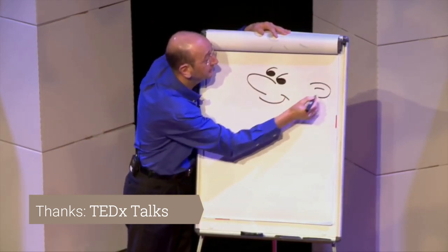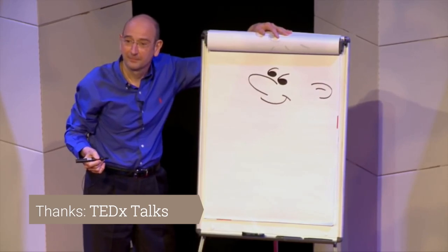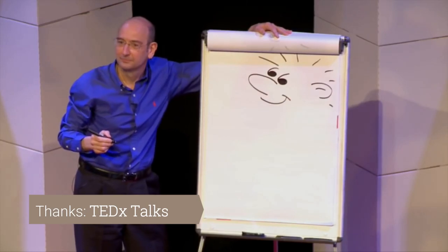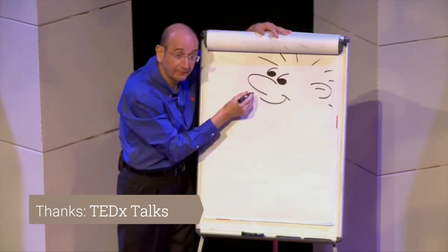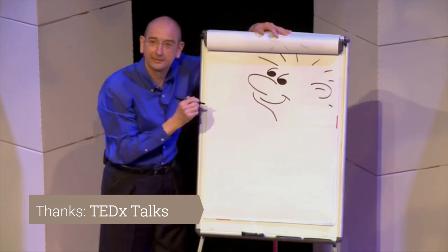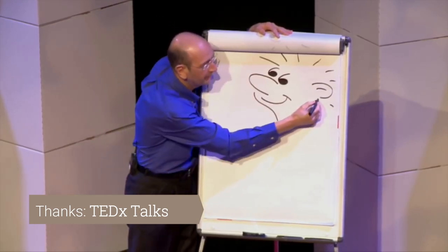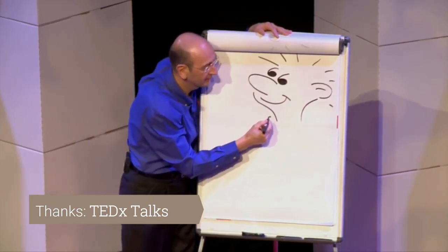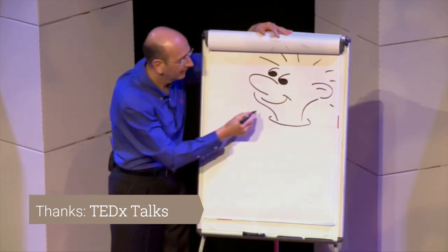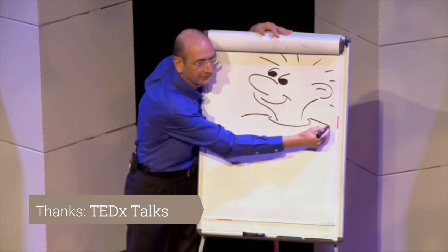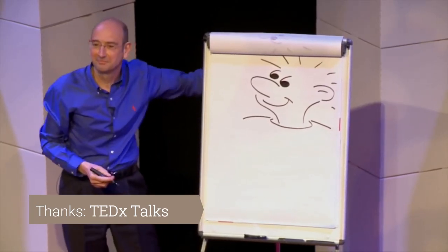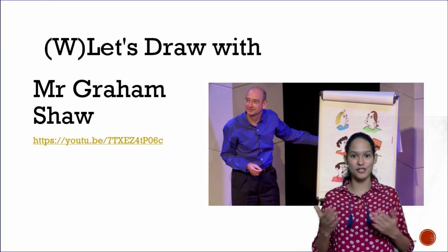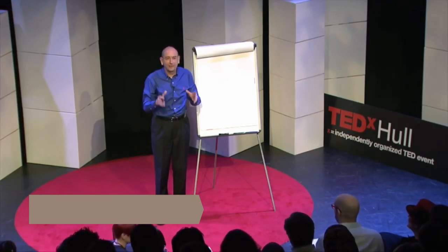Over here the ear, next some spiky hair. Put the pen to the left of the mouth, a little line like that. Pen under the ear, drop a line like that. Pen to the left of the neck, top of the t-shirt, line to the left, line to the right. Just hold your drawings up and show everybody — wasn't that enjoyable?